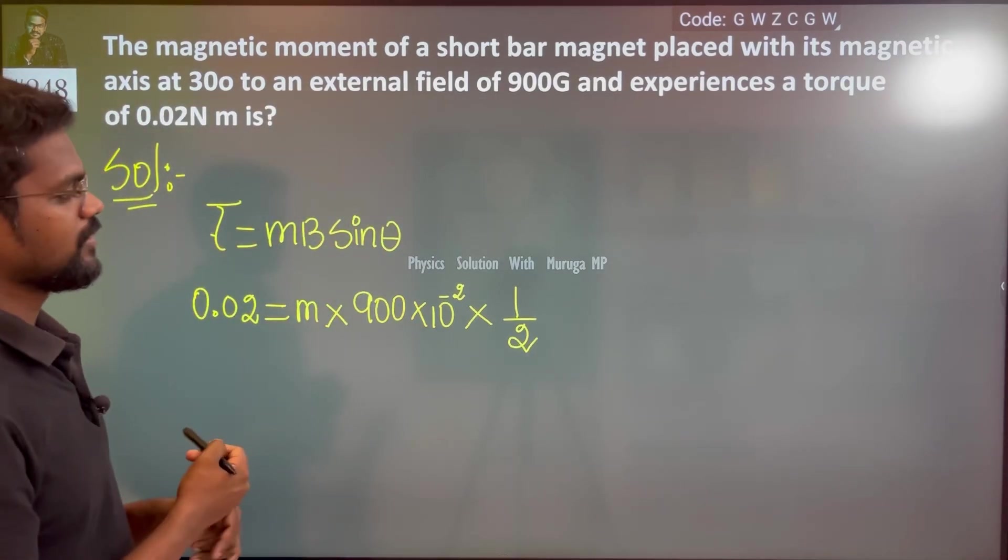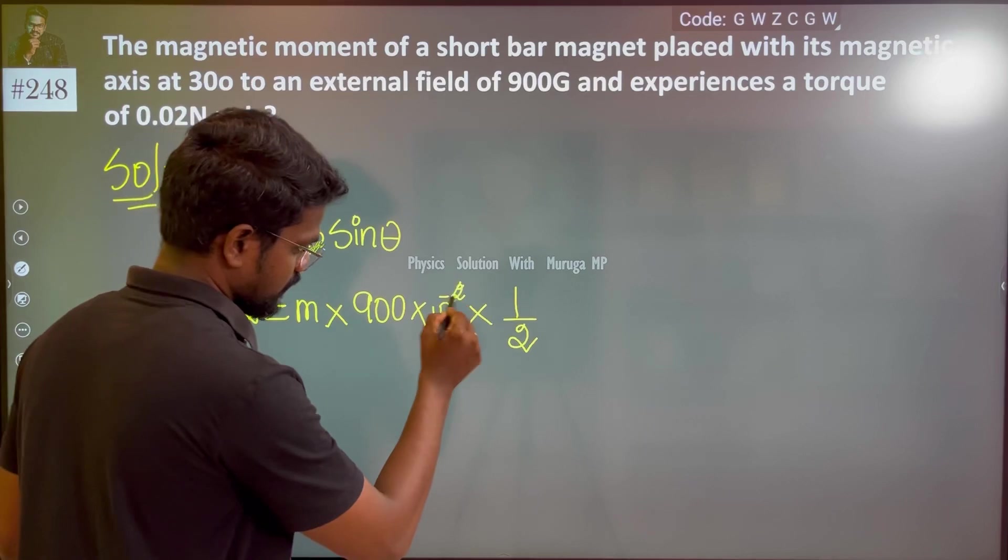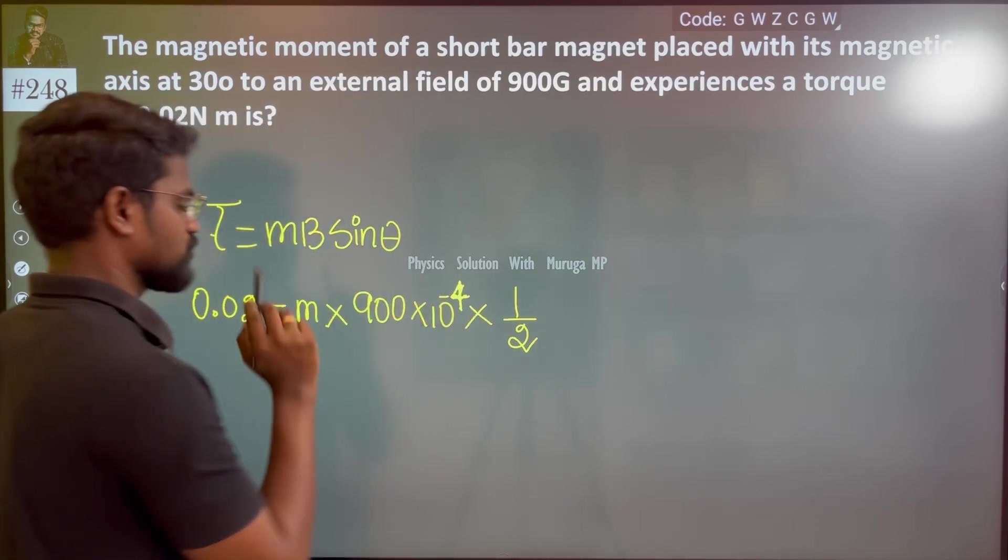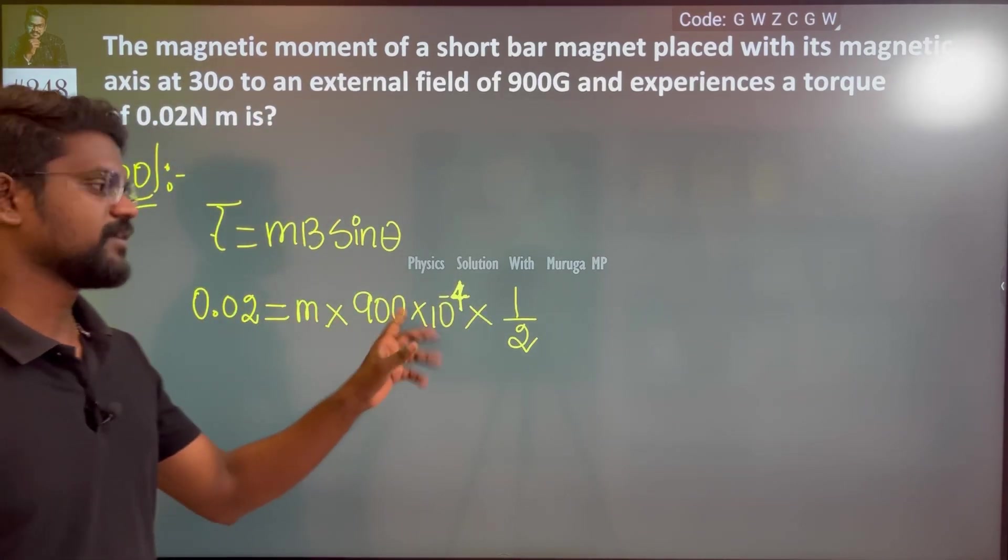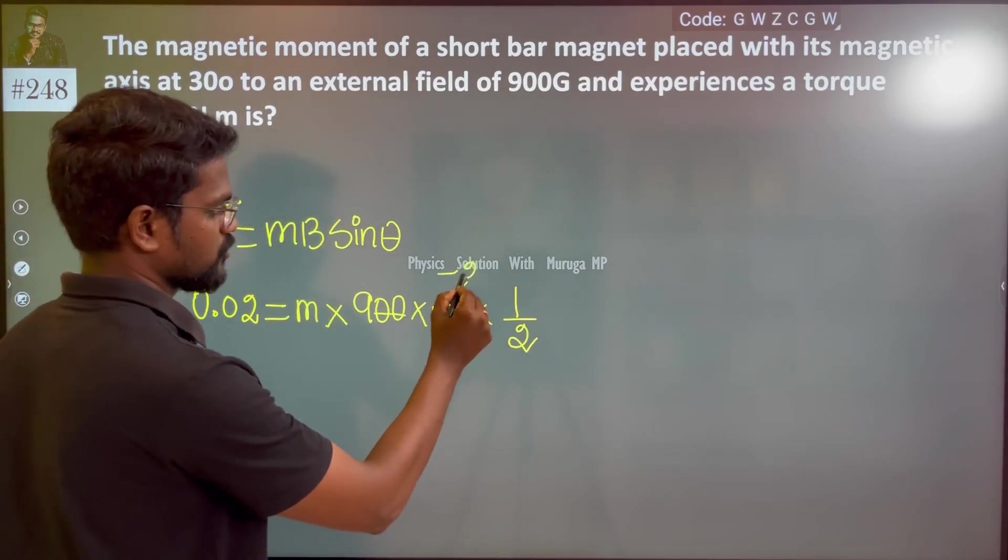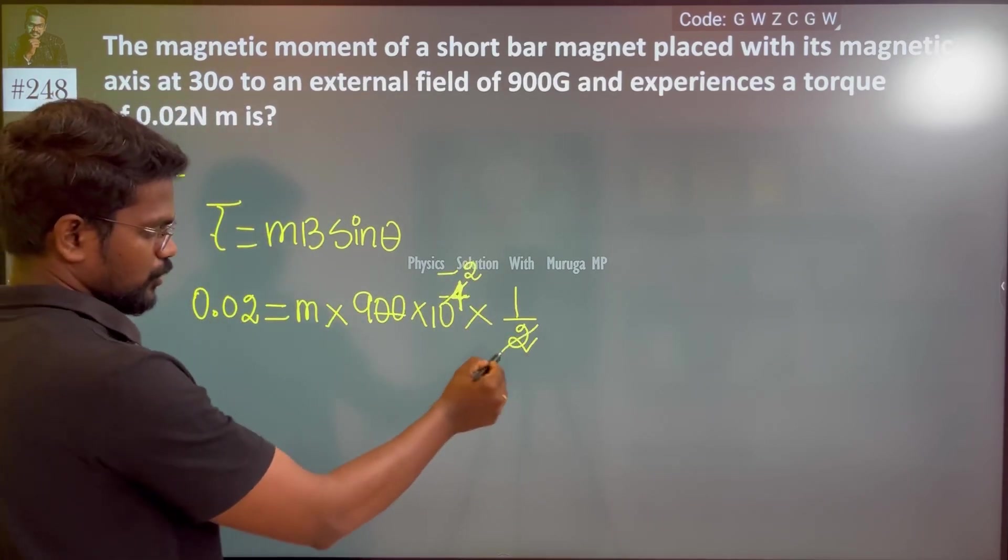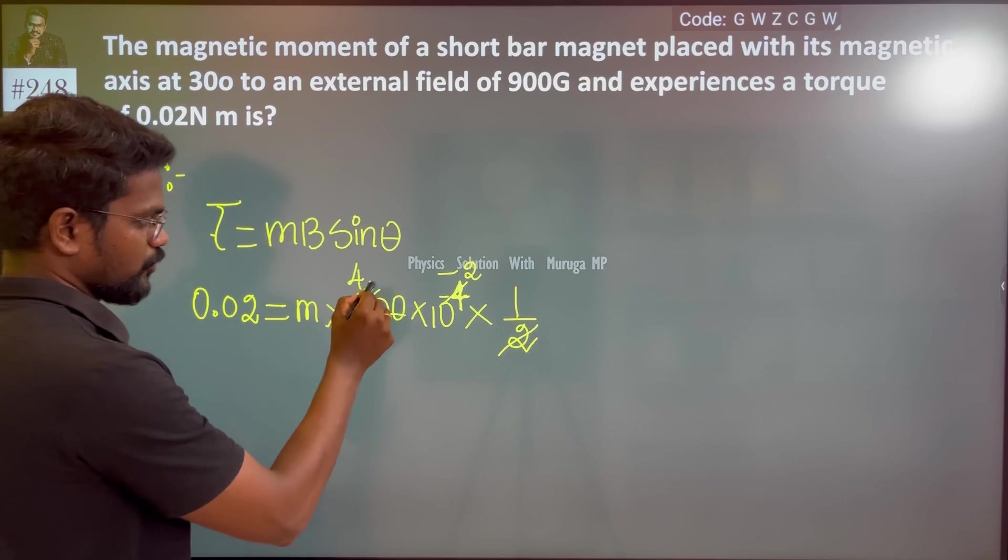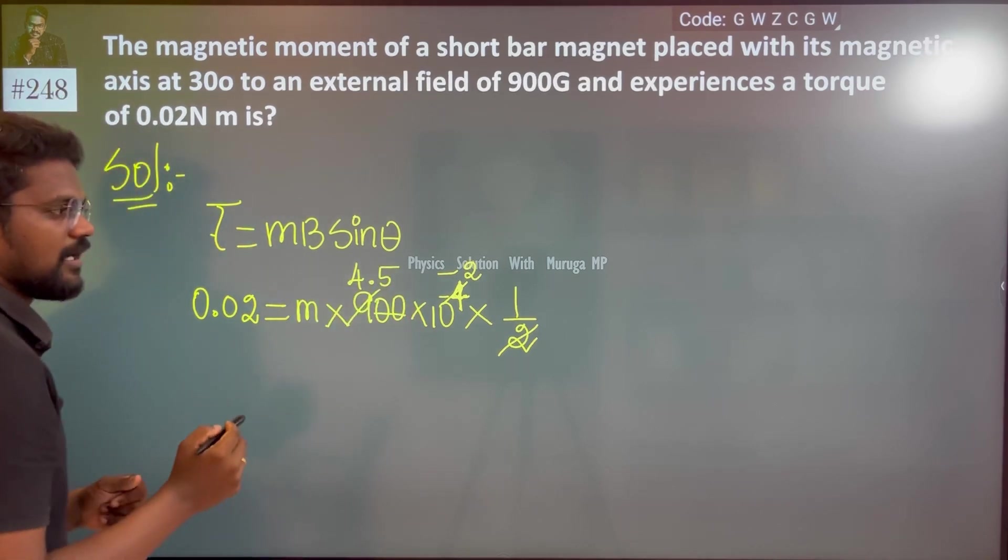Wait, Gauss is 10 to the power minus 4, not minus 2. So 900 becomes 0.09, which is 9 into 10 to the power minus 2. That becomes 4.5 into 10 to the power minus 2.